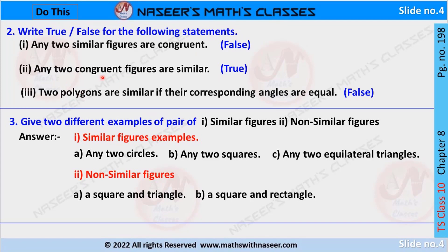Second statement: any two congruent figures are similar. It is true, because congruent means corresponding angles are equal and corresponding sides are also equal. Since the corresponding sides are equal they are automatically in the same ratio. So we can say that all congruent figures are similar.